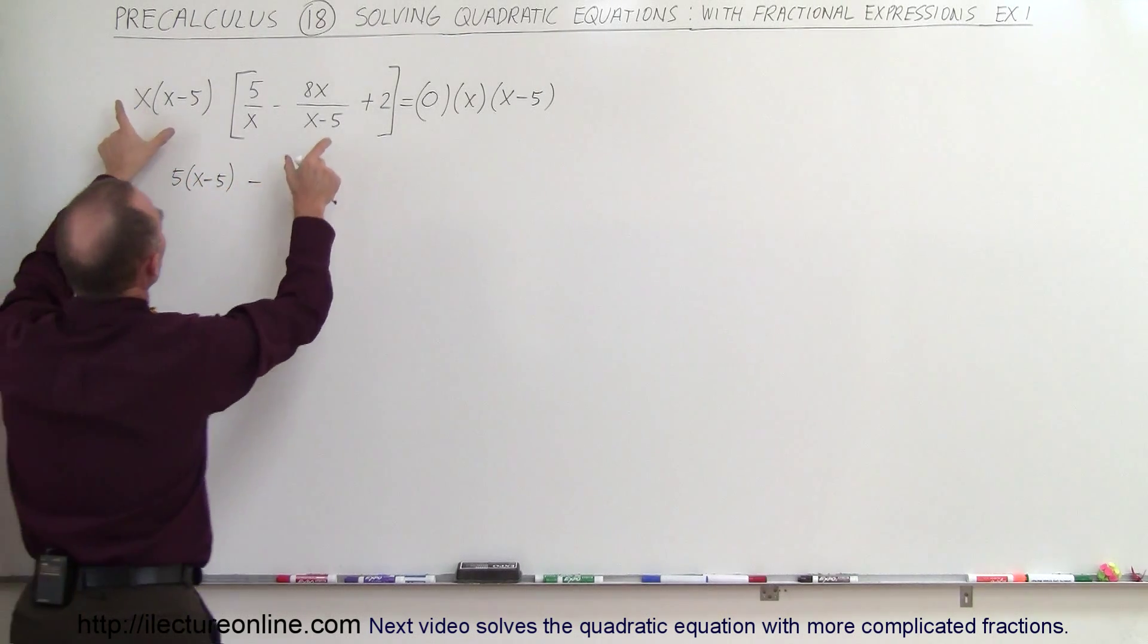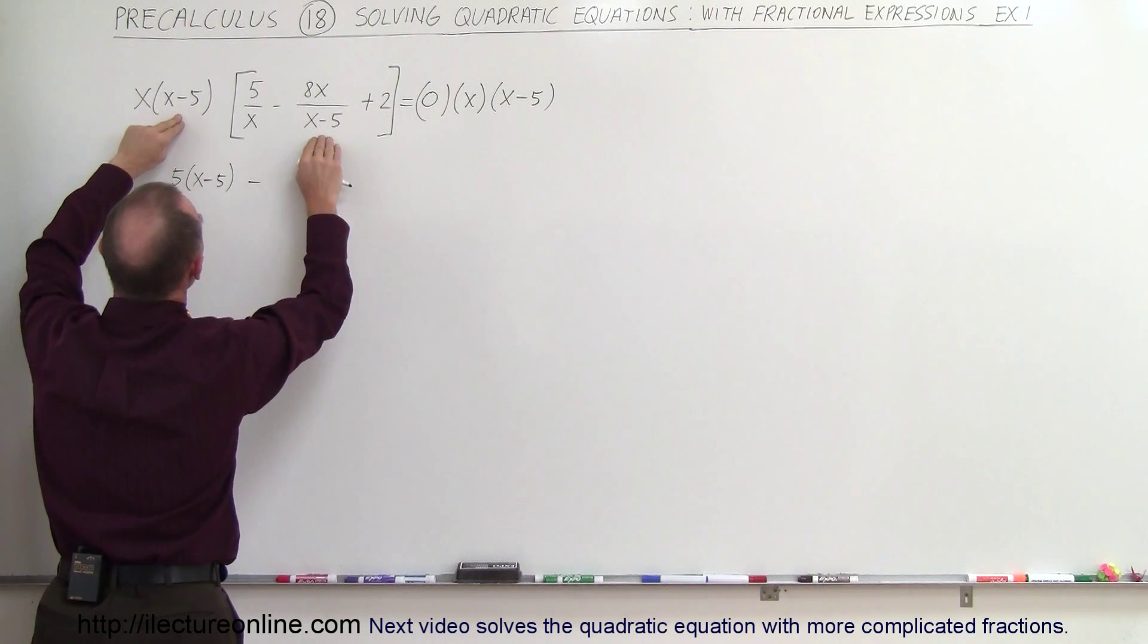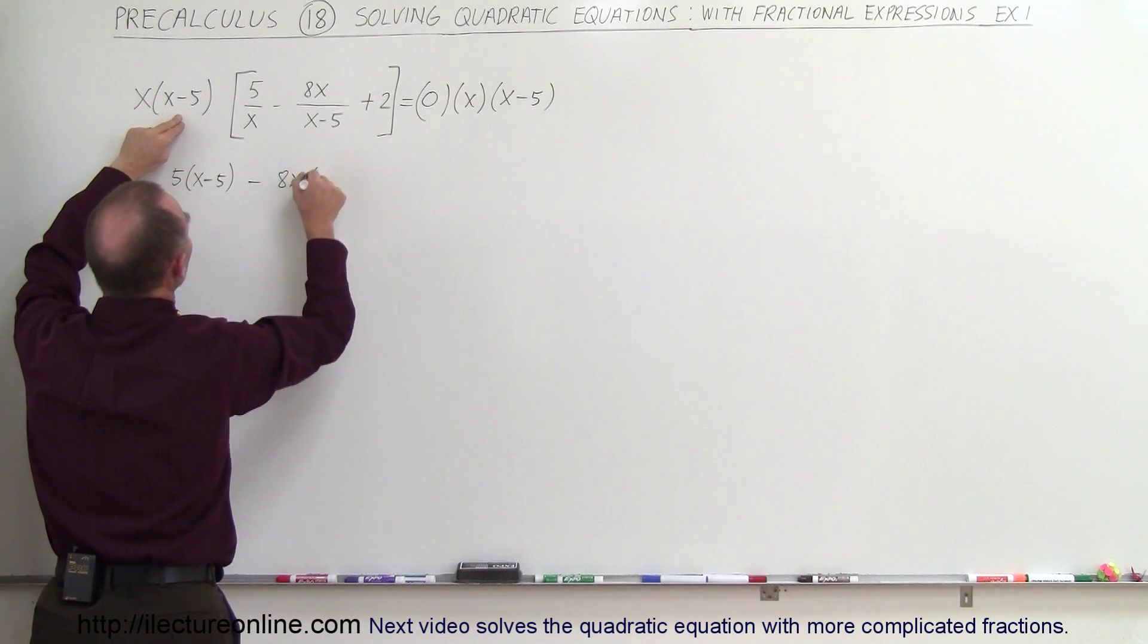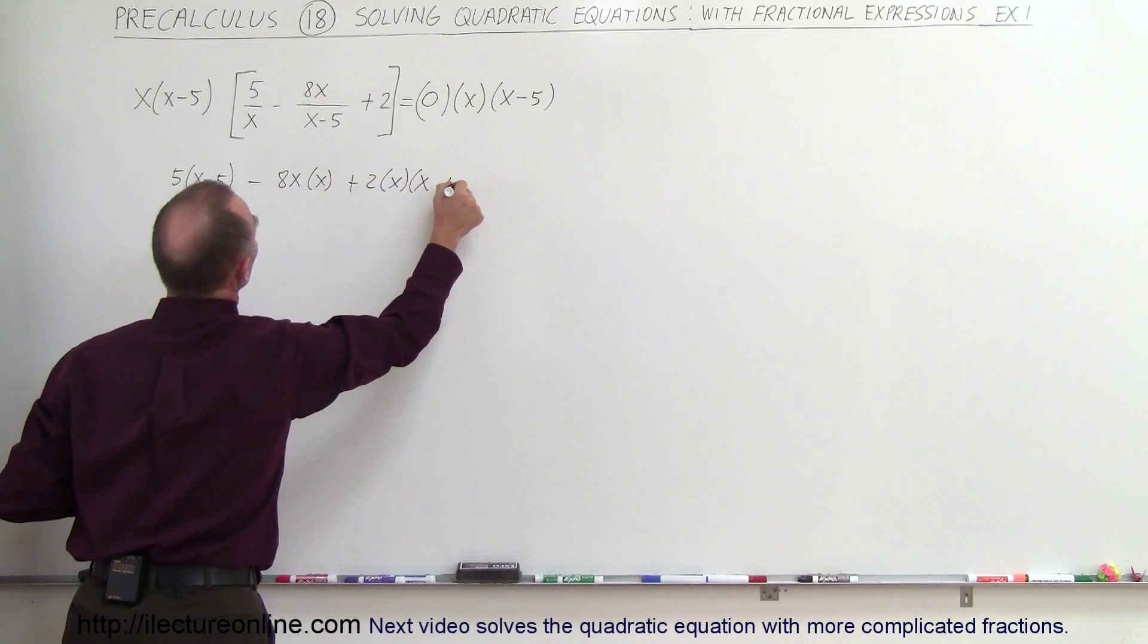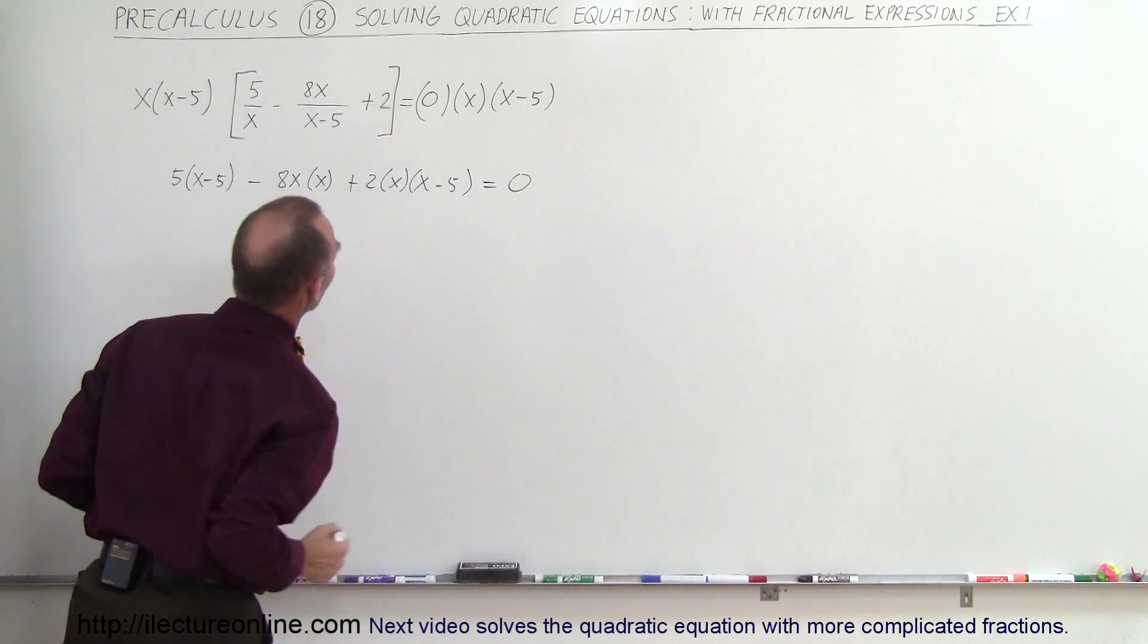Minus, we multiply this times this, the x minus 5's cancel out, and we end up with 8x times x, and then plus 2 times x times x minus 5 equals 0.